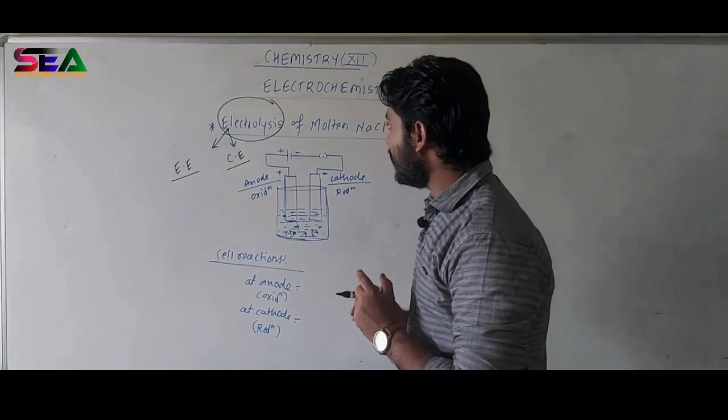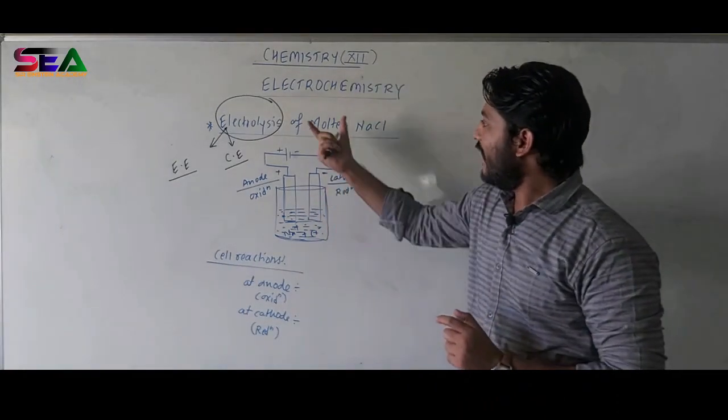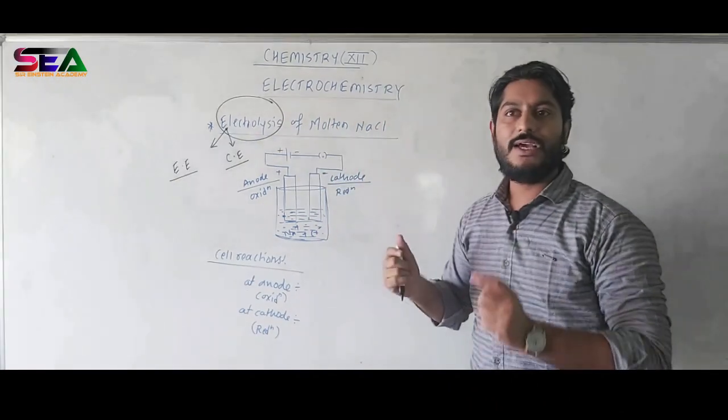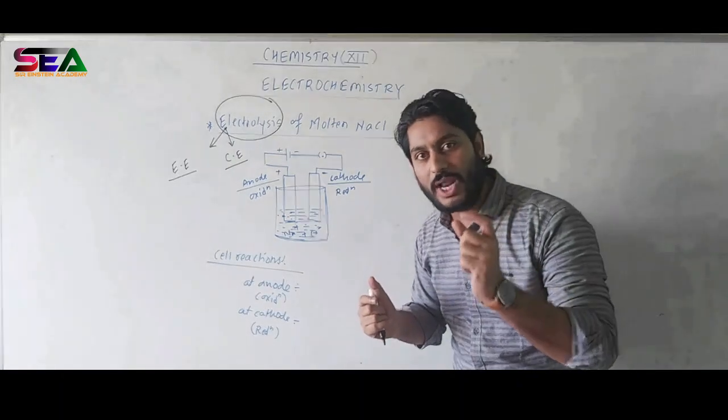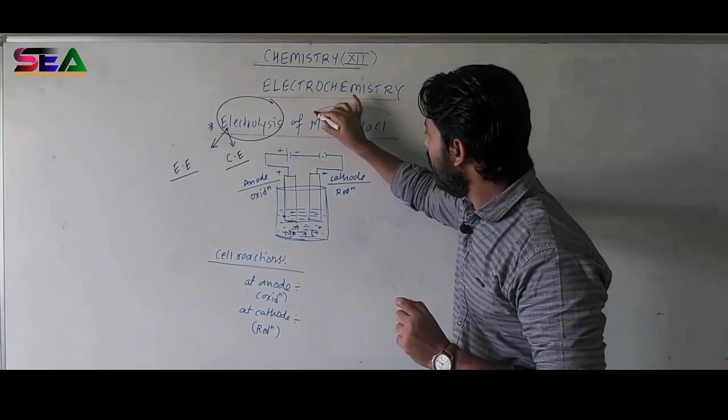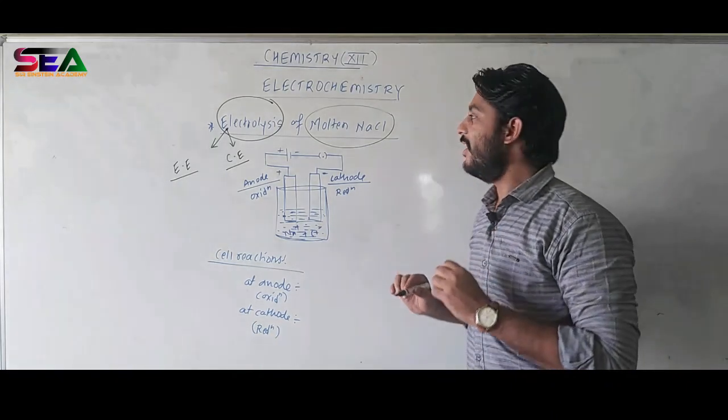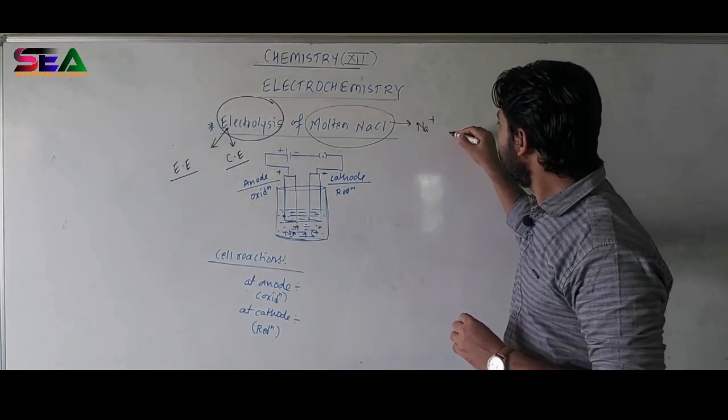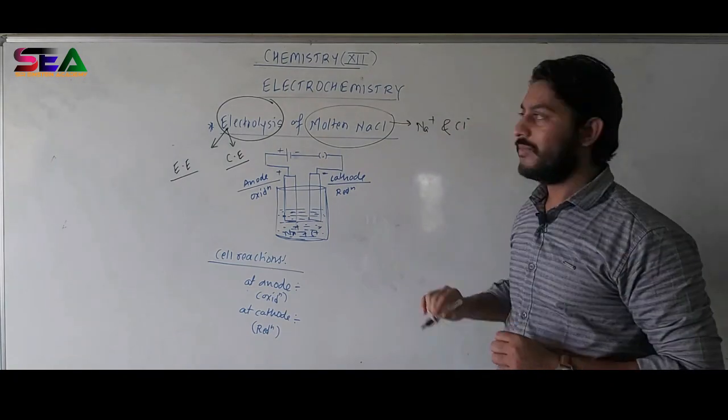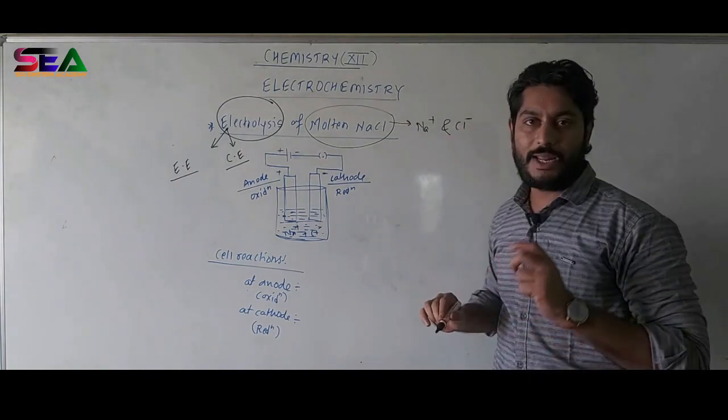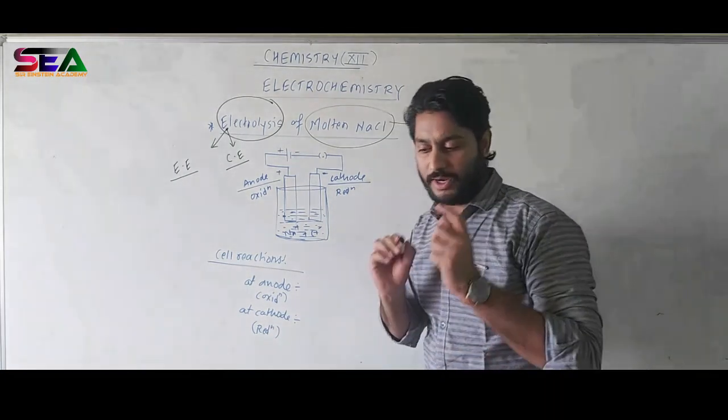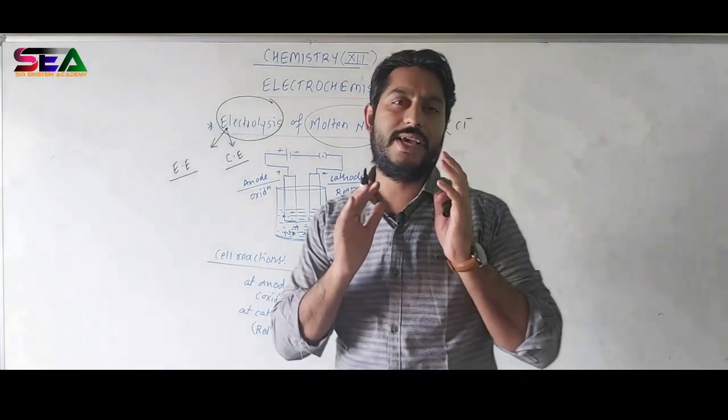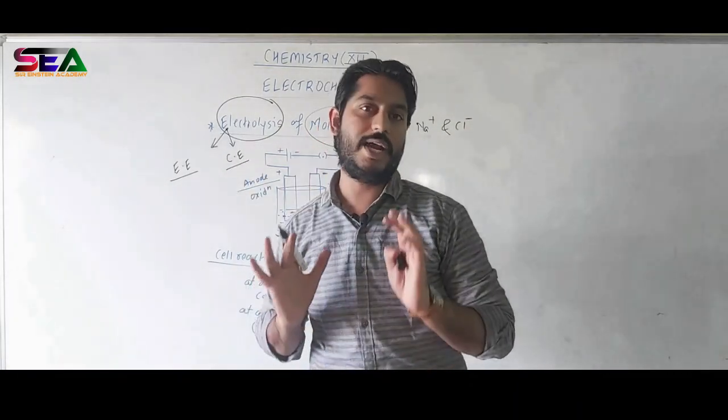Now let us understand for bringing up electrolysis of molten NaCl, I need to select my electrolyte which is nothing but molten NaCl. As you know very well, when I take molten NaCl, I will have two types of free ions in it. The first is Na+, which is cation electron deficient. The second is Cl- which is anion electron rich.